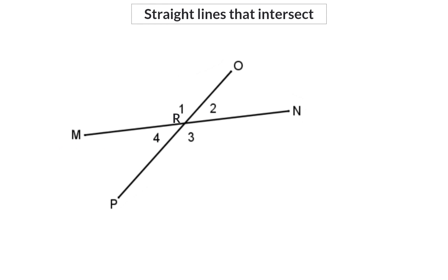With the knowledge that we now have about angles on a straight line, we can derive a new property when two straight lines intersect. Let's say we knew that angle R1 was 140 degrees. Then, using angles on a straight line MN, we can calculate angle R2 as 40 degrees.